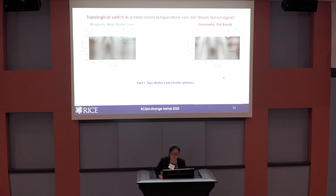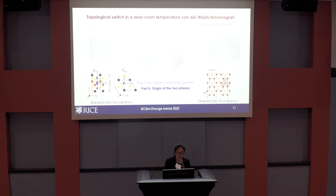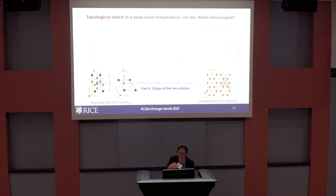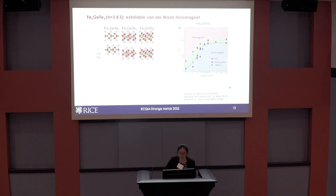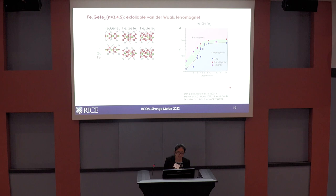I'll go through this in three steps: first introduce the FGT family, then show what we observe from photoemission and the details of the two distinct electronic phases, then explain how we understand these topological features based on crystal symmetry from the two phases achieved by different thermal treatment, and finally demonstrate the switchability between the two phases. Fe₅GeTe₂ belongs to a family of exfoliable Van der Waals ferromagnets discovered a couple of years ago.